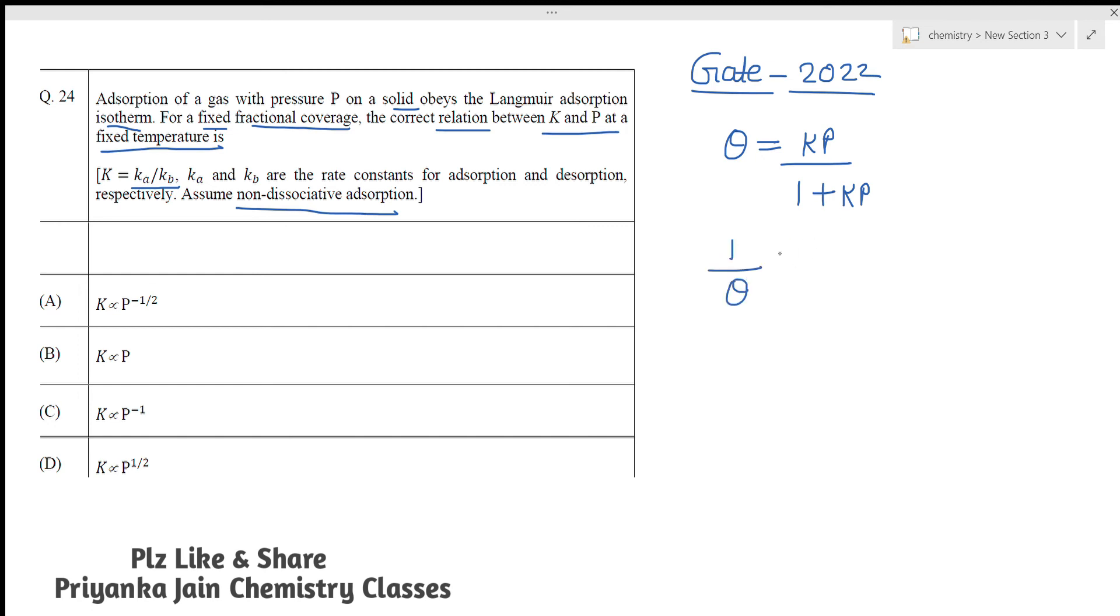Now take its reciprocal. 1 upon theta will be equal to 1 plus Kp upon Kp, so it will be equal to 1 upon Kp plus Kp upon Kp. Now see here, you can write it as 1 upon Kp plus 1. 1 upon theta is equal to 1 upon Kp plus 1. Now take this 1 to the right side. So you are getting 1 upon theta minus 1 is equal to 1 upon Kp.